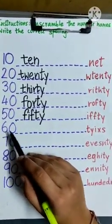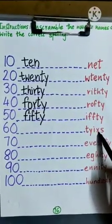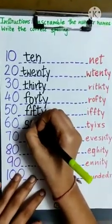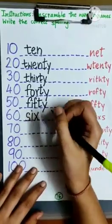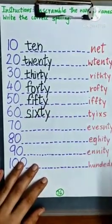Then 60. T-Y-I-X-S. First S, then I, then X, then T, and Y, sixty.